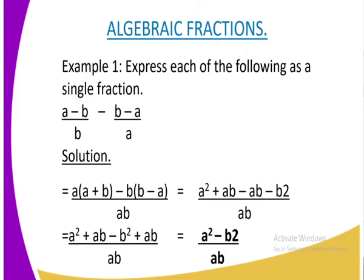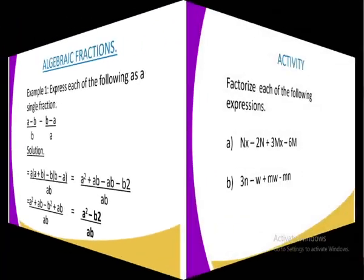Eventually, you are going to group the like terms together. Remember, I have said that the LCM must remain at the end of everything. So that is why we are having A squared minus B squared over AB.